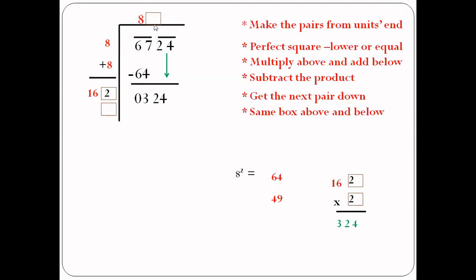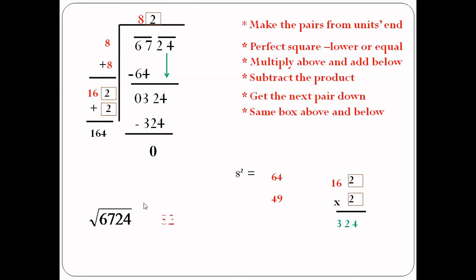Following the rule again — multiply above and add below — we write 2 above the number. 162 multiplied by 2 is 324, and 324 minus 324 is 0. Also, 162 plus 2 gives 164. Since the remainder is 0, we stop. The number above is 82, so the square root of 6724 is 82. Thank you.